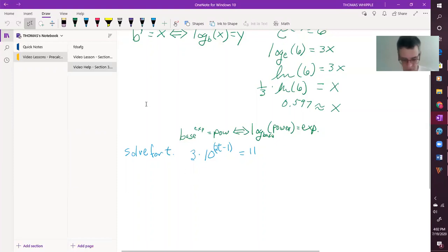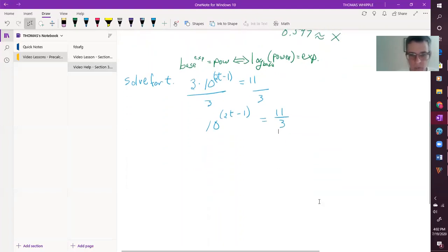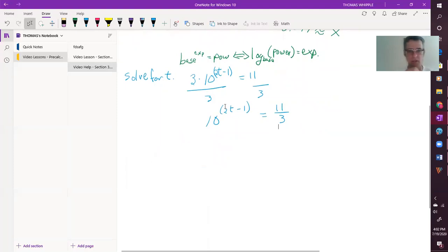Okay, see if this is what you did. I might have made it a little trickier because, first of all, we can still divide by 3 like we were doing before, but we're going to be kind of left with that fraction there. So we'll have 10 to the 2t minus 1 equals 11 thirds. And now what we need to do is get to that variable that's in the exponent. So that's going to require a logarithm.